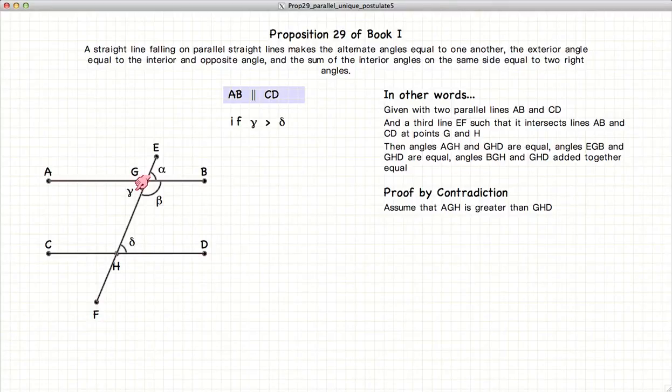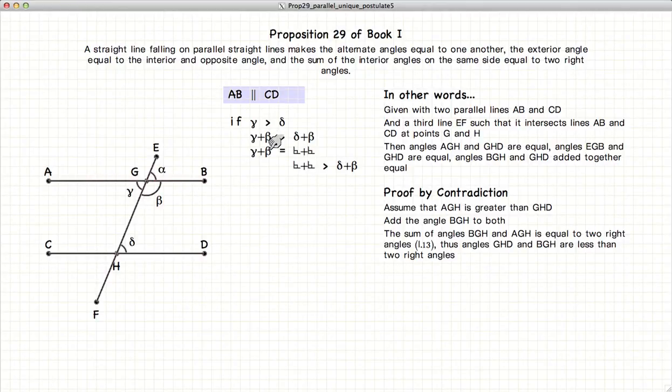So now let's assume that gamma is actually larger than delta. If this is the case, then gamma plus beta would be greater than delta plus beta. But gamma plus beta is equal to 180 degrees since AB is a straight line.